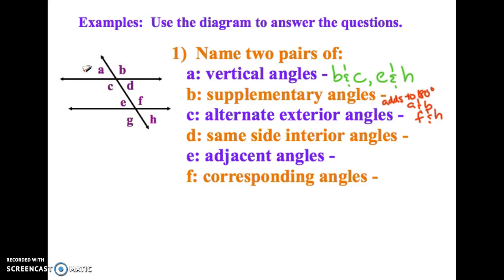Okay, the third type, alternate exterior angles. This time you only have two choices. So they have to be outside of the parallel lines on opposite sides. So A and H is one of your choices. You may have also found B and G.